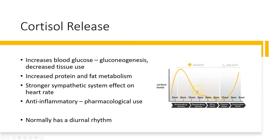Cortisol has a normal diurnal rhythm for release, where as you start to wake up during the day, your cortisol will be at its peak. This will help increase our blood glucose through gluconeogenesis, and it decreases the utilization of glucose by our tissues. It also increases protein and fat metabolism, and creates a stronger sympathetic nervous system effect on heart rate. It also has an anti-inflammatory effect and is often used pharmacologically for that function. As we go throughout the day, cortisol levels normally drop to their lowest in the middle of the night, and then as we get ready to start our day, those levels increase again.